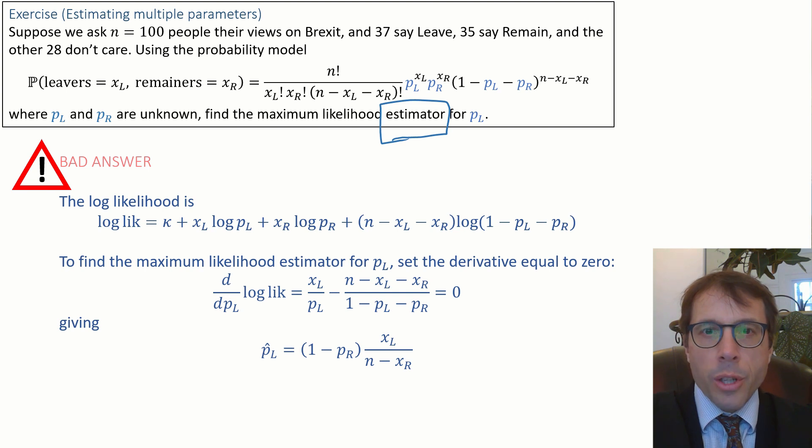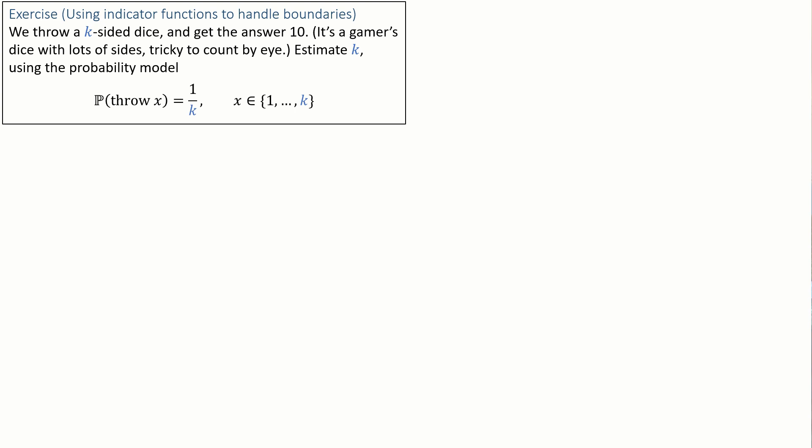Our final example will show a nifty math trick for dealing with parameters where the parameter influences the range of a random variable. Using indicator functions to handle boundaries, we throw a k-sided dice and get the answer 10. I'm imagining it's one of these dice with lots and lots of sides, too hard to count the number of sides by eye. Estimate k using this probability model. Let's get started. Let's write out the likelihood, the probability of observing the data we saw. The likelihood of k is 1 on k.